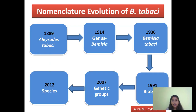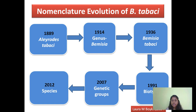This is how the nomenclature revolution of Bemisia tabaci took place over several years. In 1889, it was described as Aleurodes tabaci by Gennadius. The genus term was given in 1914. In 1936, Aleurodes tabaci was renamed Bemisia tabaci by Takahashi. In 1991, biotype nomenclature was given. In 2007, genetic groups nomenclature was given, followed finally by the term species being given in the year 2012.